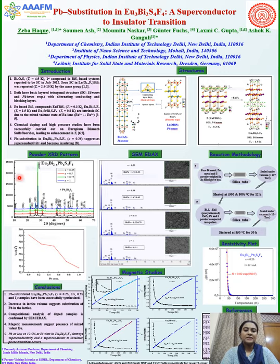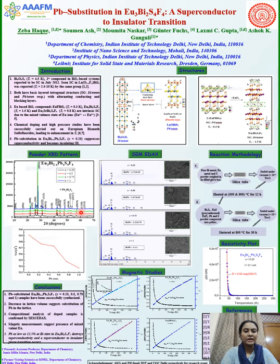This is the powder X-ray diffraction pattern of lead-doped EU3Bi2S4F4 samples. All the reflections could be well indexed to the tetragonal unit cell with space group I4/mmm. A very small impurity peak corresponding to Pb2Bi2S6 was also detected, which was less than 5% in all the samples.